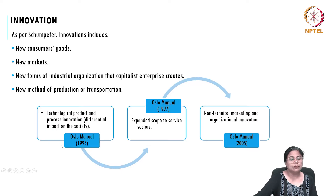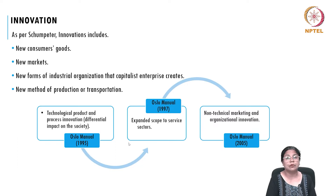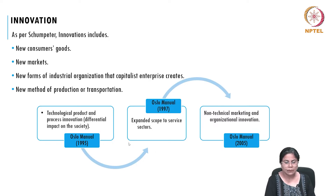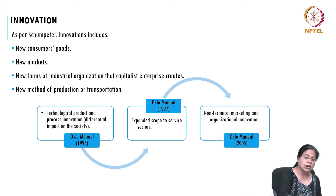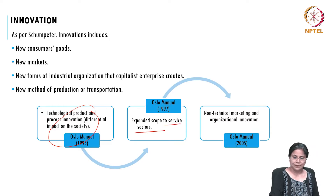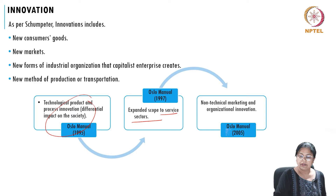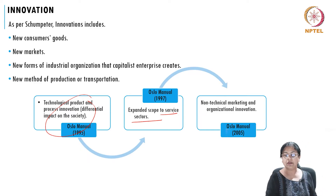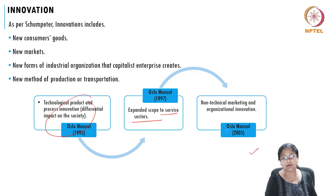Initially, if you look at the manual in 1995, it talked about technological product and process innovation and the differential impact such innovation has on society. Within two years, they extended this product and process innovation discussion to the service sector. Then within the next eight years, the idea was to bring in non-technical innovation in the form of marketing and organizational innovation.